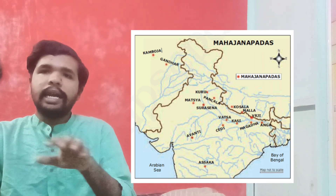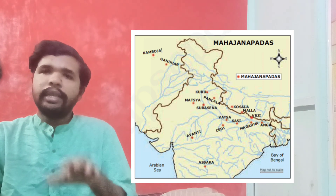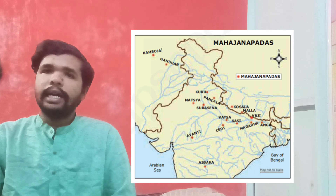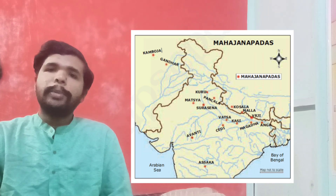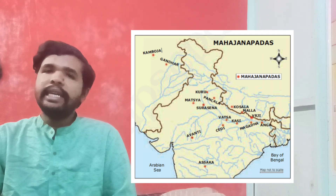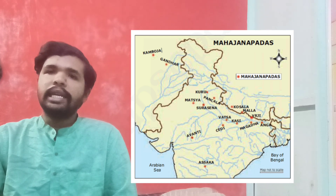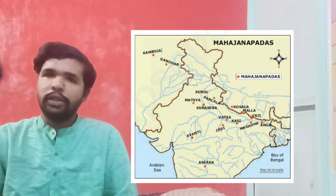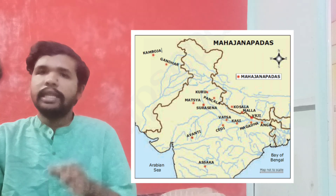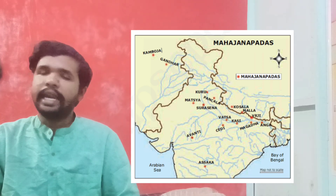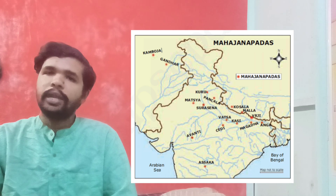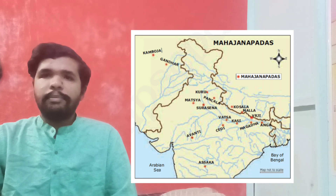The next Mahajanapada is Chedi. Chedi has its own capital. The king associated with Chedi is Shishupala. The next is Vatsa. Vatsa has Kausambi as its capital.